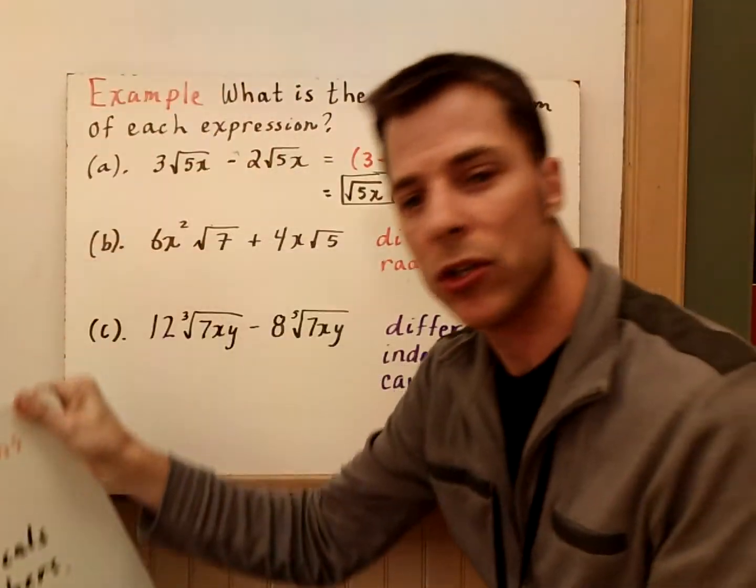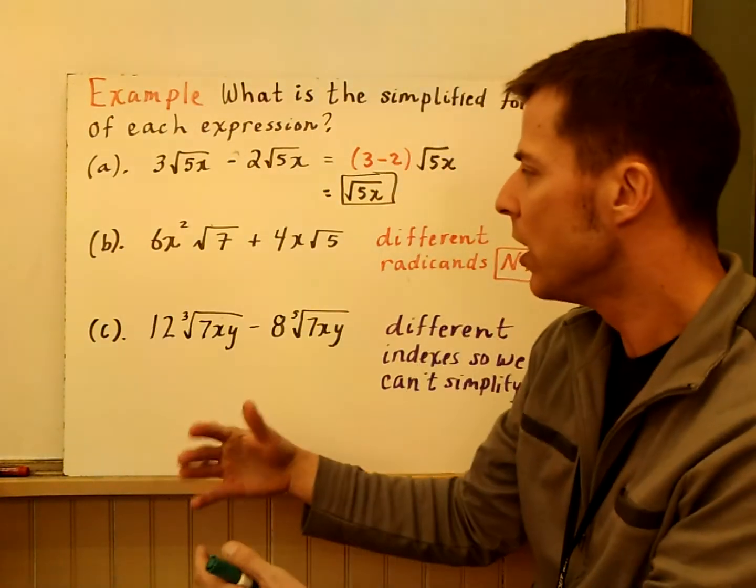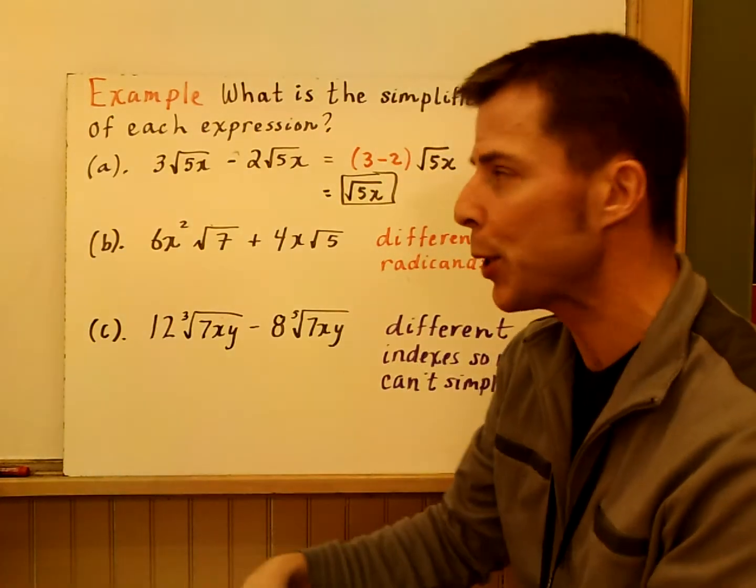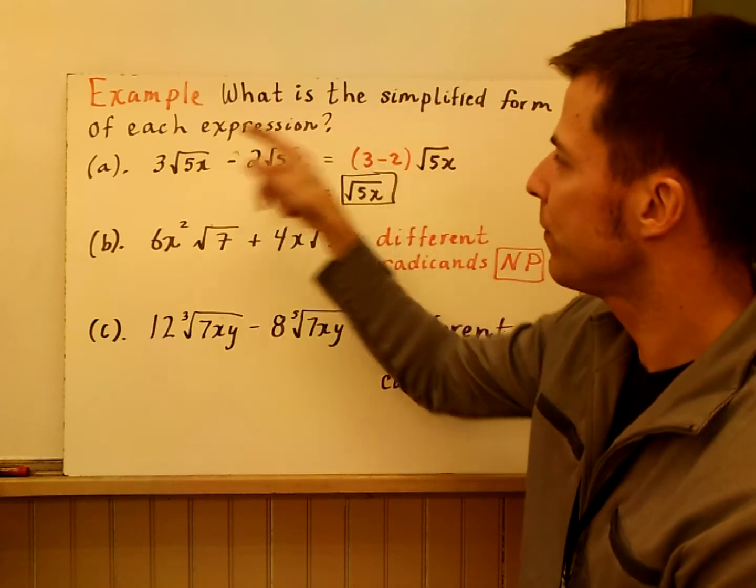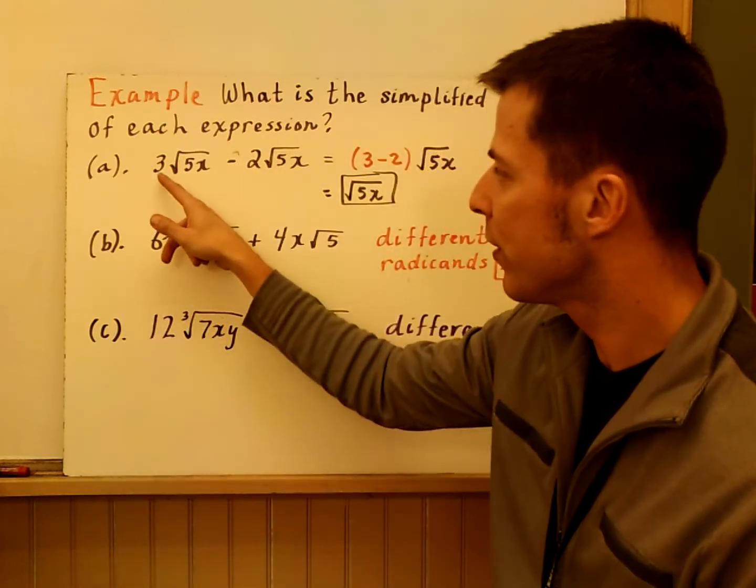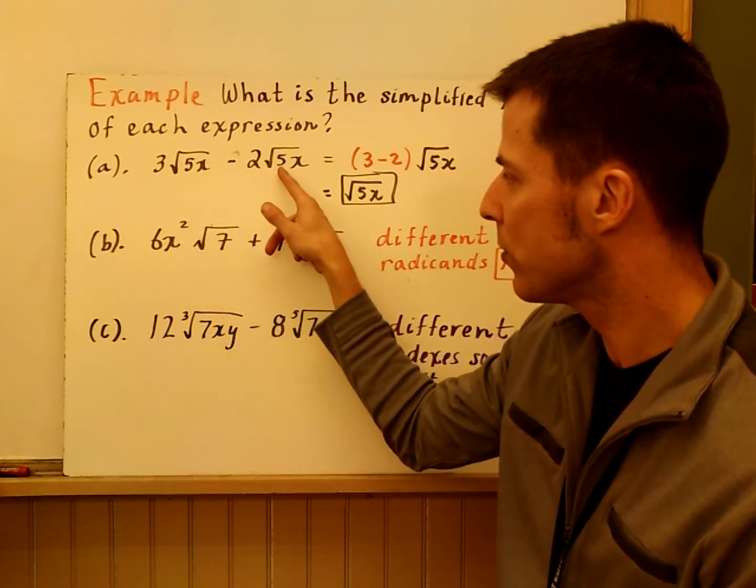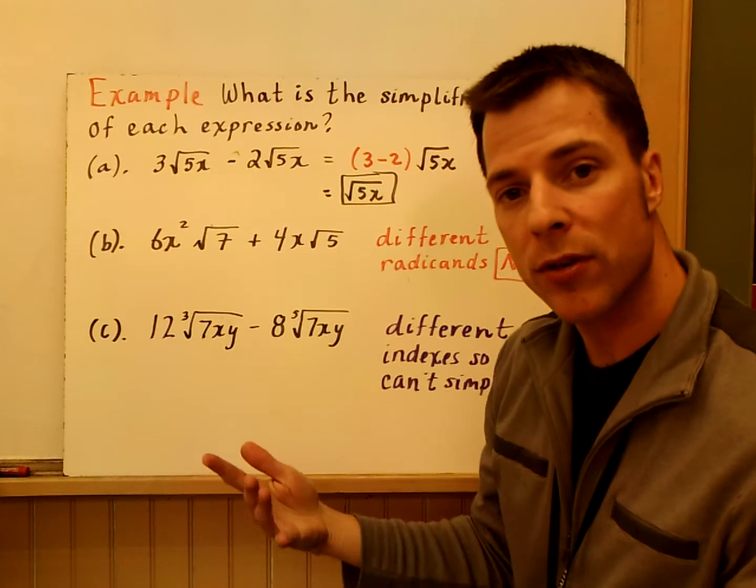On the first slide, what we're going to look at is the sums and difference rules. It's a pretty easy rule to follow. We're actually going to show you two that don't work. What is the simplified form of each expression? Here's that distributive property. We have 3 square roots of 5x minus 2 square roots of 5x. How do you combine those?